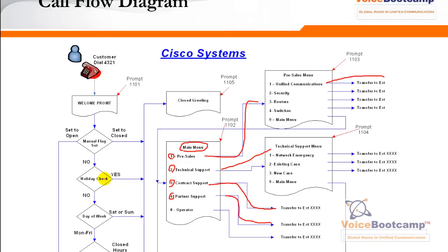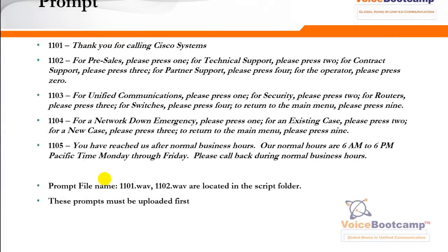We're going to build this from the ground up — from zero. I'll show you how this script is built, test it for you, cover some error-checking mechanisms, and show you how to debug the script using the debug command. These are some prompts provided by Cisco as part of the package, widely available in the public domain. They include prompts like 'Thank you for calling Cisco Systems,' 'For pre-sales press 1,' 'For technical support press 2' — all predefined WAV files.